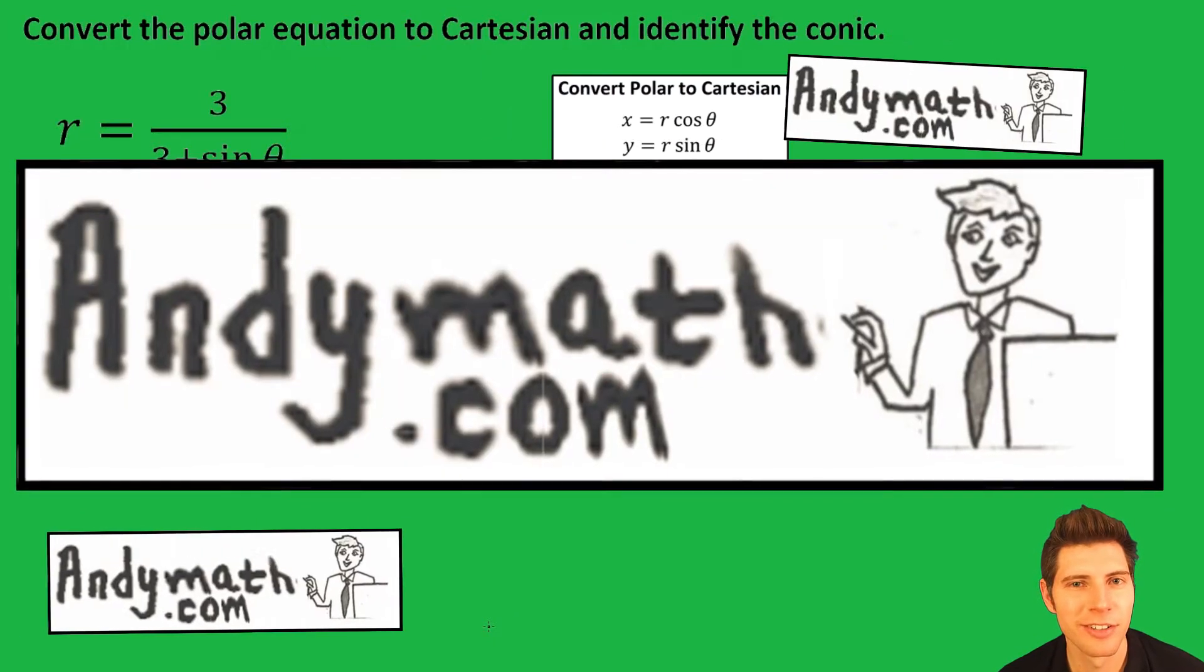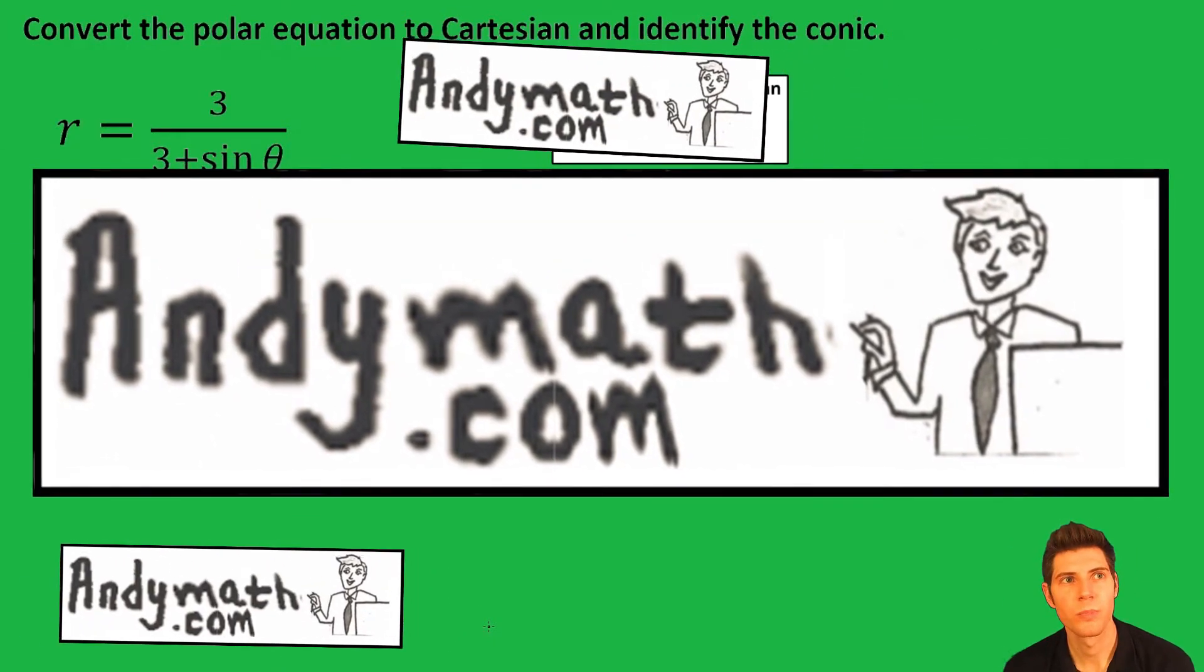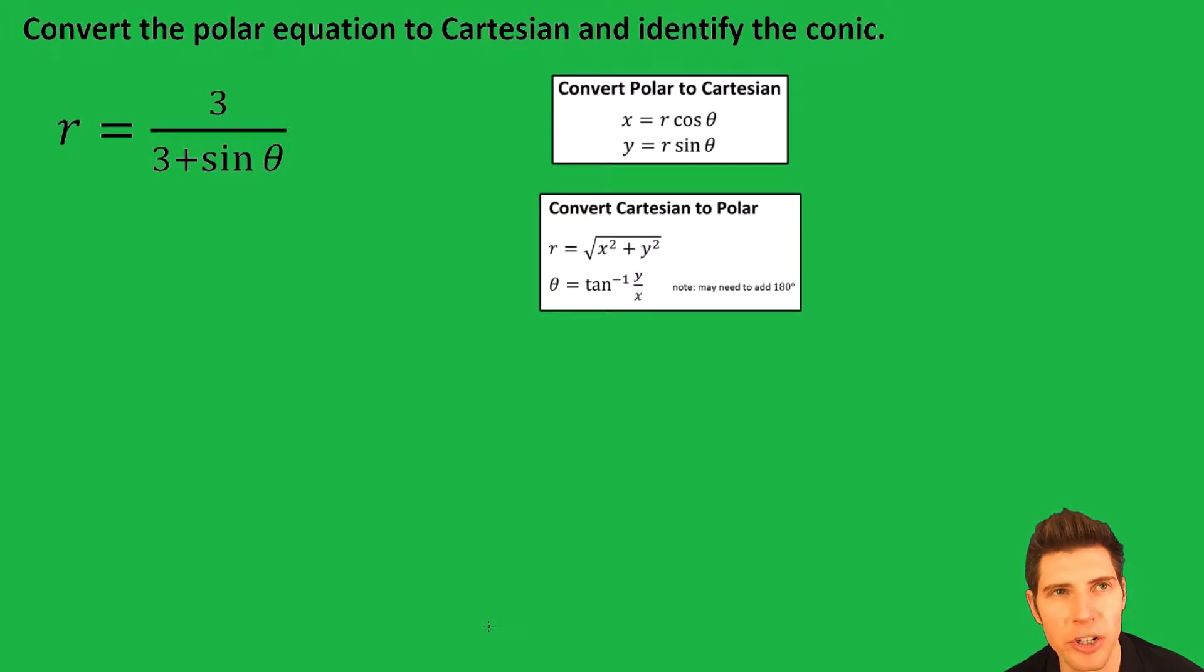Hey guys, welcome to this video. It says convert the polar equation to Cartesian and identify the conic. So our whole goal here is to express everything in terms of x and y. We're going to change the r and the theta into an x and a y. Anytime you see it set up like this, your first step is to cross multiply.